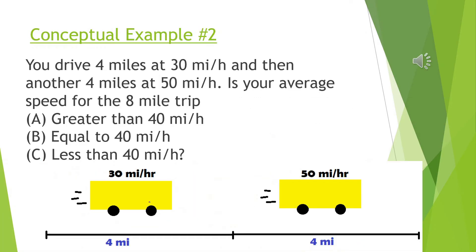Let's look at the next problem. So this is a conceptual problem and it's actually pretty difficult. You drive 4 miles at 30 miles an hour, and then another 4 miles at 50 miles an hour. Is your average speed for the entire 8-mile trip greater than 40 miles an hour, equal to 40 miles an hour, or less than 40 miles an hour? You're going 30 miles an hour for 4 miles and then 50 miles an hour for 4 miles. You would think equal distances with different miles per hour, so it's probably just going to be 40 miles an hour. However, this isn't true.